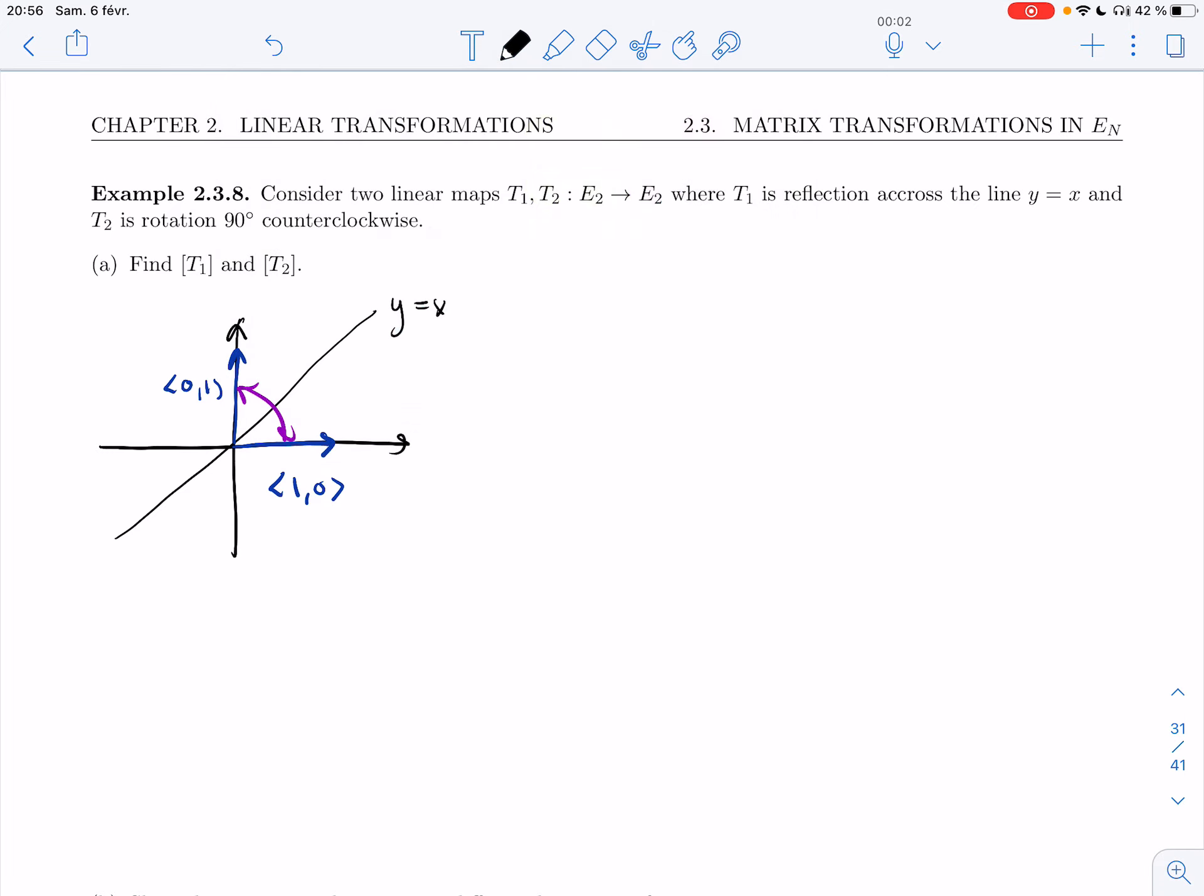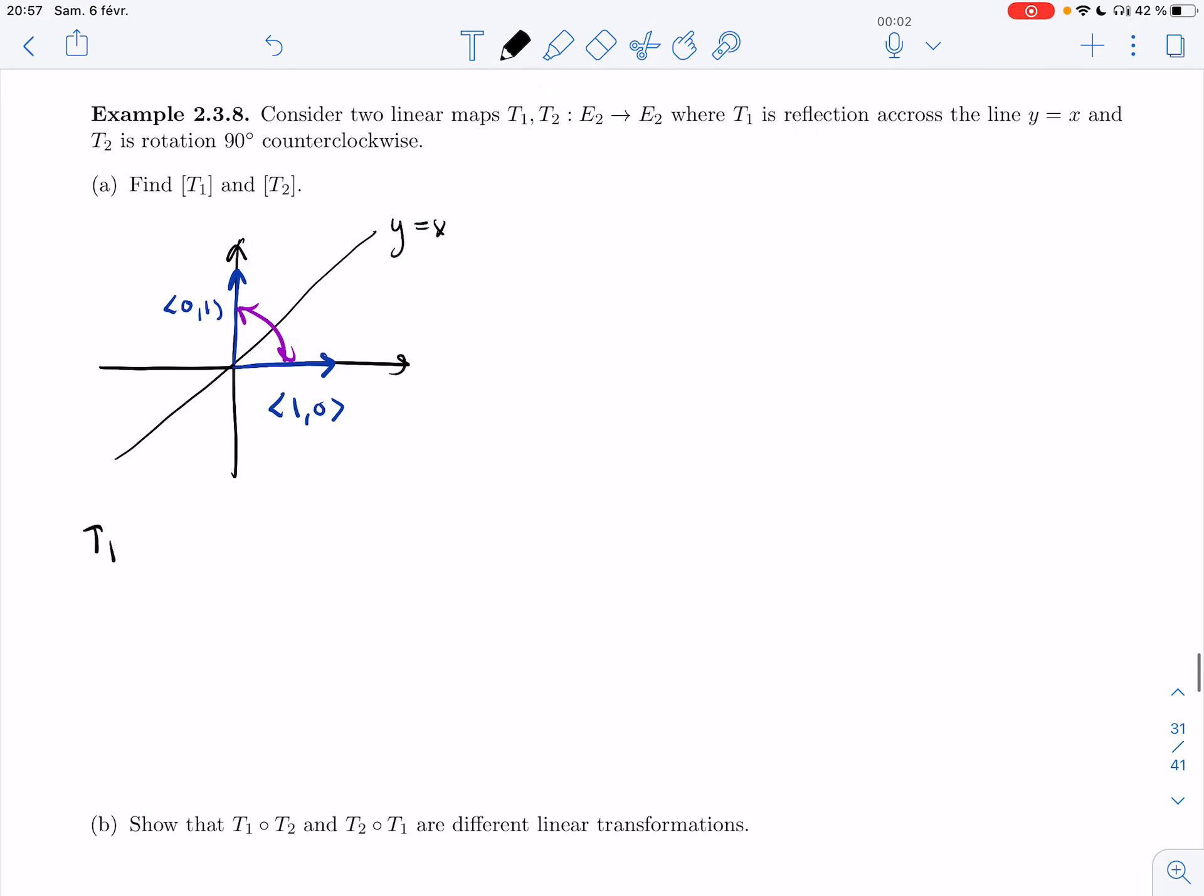So that means T1 of (1,0) is (0,1) and T1 of (0,1) is (1,0).